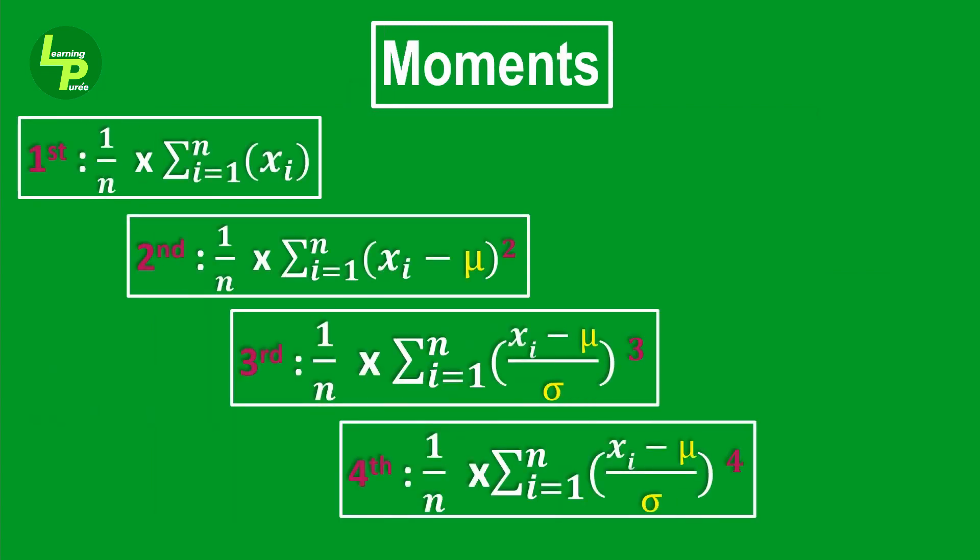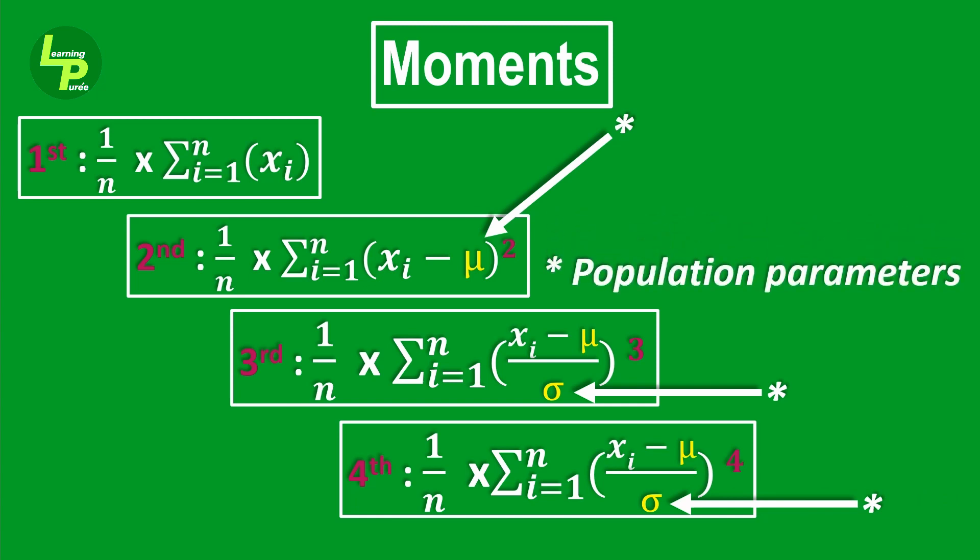Note that from the second moment onwards, we are using the terms like μ and σ that represent population parameters for arithmetic mean and standard deviation.